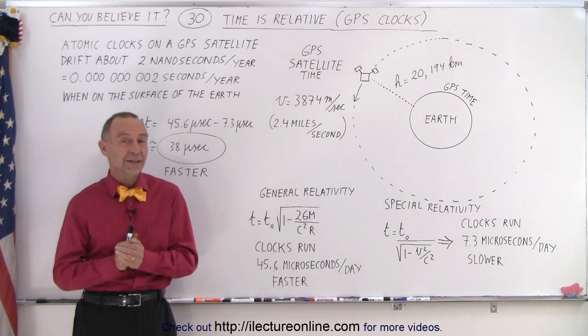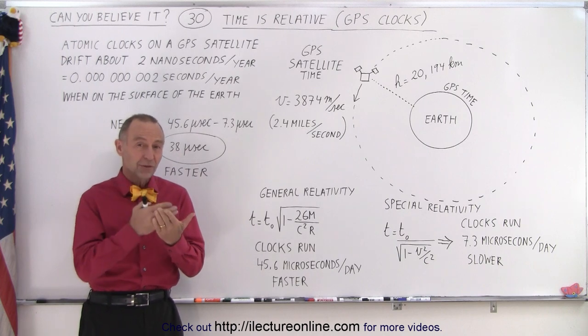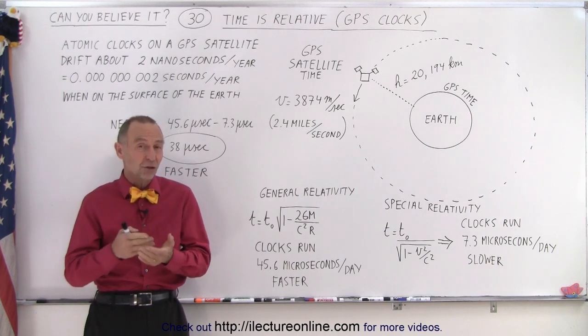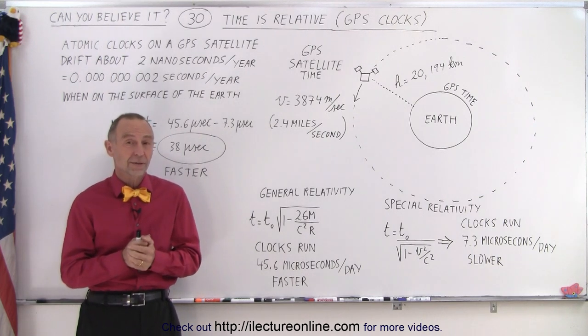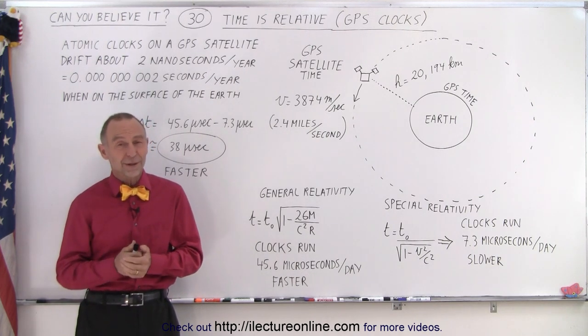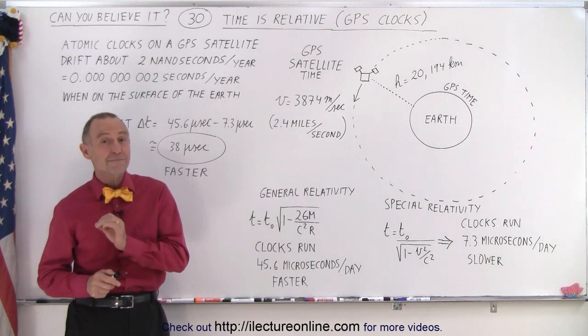But it turns out that if we did not adjust for the special theory of relativity and the general theory of relativity in our GPS satellite clock systems, we wouldn't be able to use GPS. And let me explain, because it does affect GPS actually tremendously.